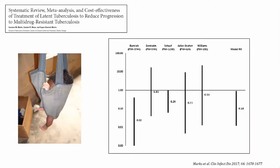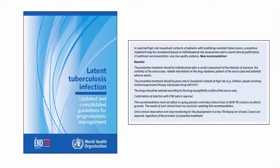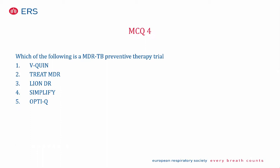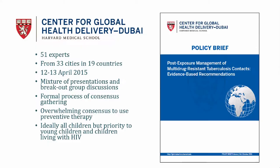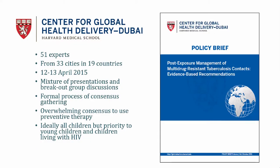Regarding MDR-TB infection prevention: a systematic review of observational studies showed a 90% risk reduction when child contacts of MDR-TB are given preventive therapy tailored to the source case's infection. A consensus statement overwhelmingly recommended that children, particularly young children, should be given some kind of preventive therapy. The most recent WHO guidance endorses MDR preventive therapy in certain circumstances.